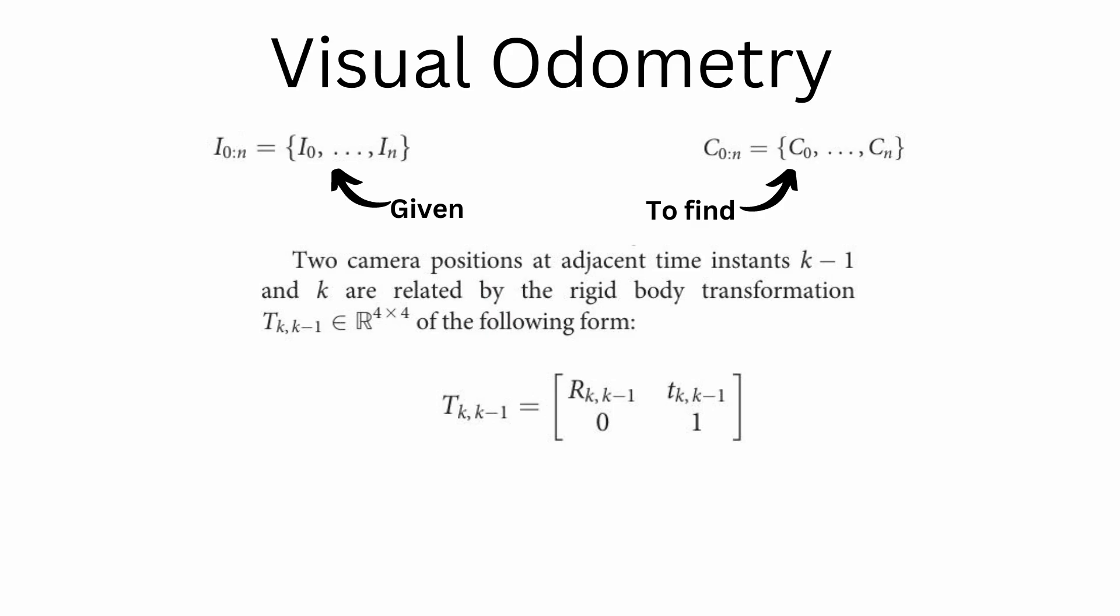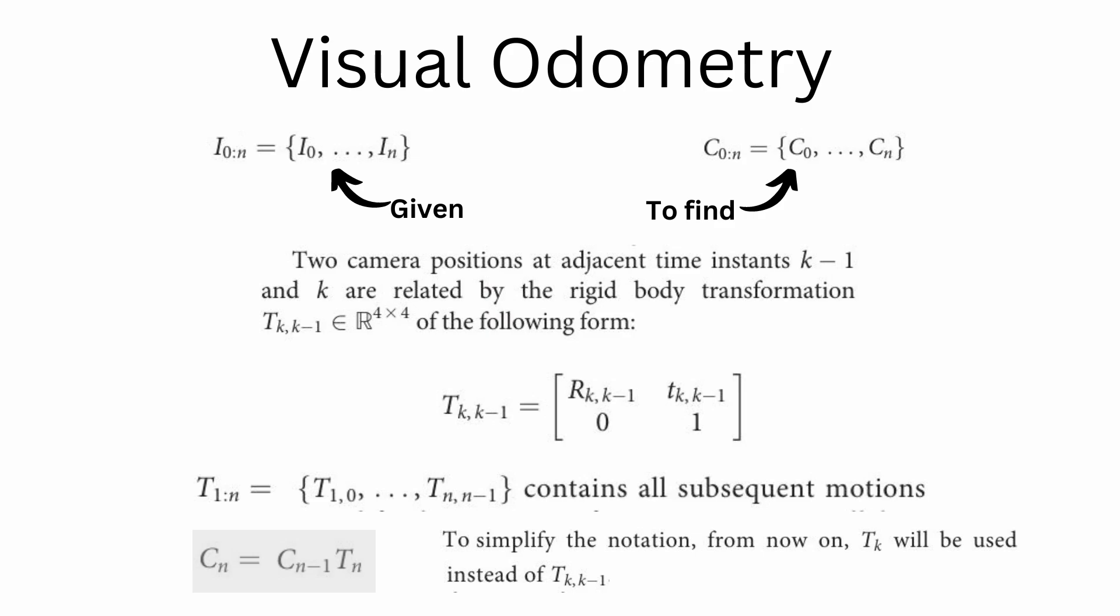Now, let's go into the math of this. Two camera poses at adjacent time instance k minus 1 and k are related by this rigid body transformation, T of k and k minus 1, where R is your rotation matrix and t is your translation matrix. So R is 4 by 4 and t is 3 by 1. This entire set of T contains all subsequent motions. Now, the relationship between the camera pose at time instance n is related to this T of n. It means that if we know the previous camera pose and the transformation between camera pose k and k minus 1, we can actually get C of n, with C_0 being the camera pose at k equal to 0.